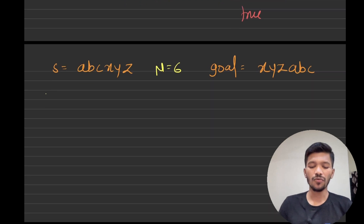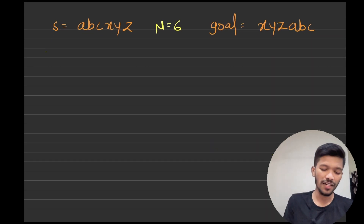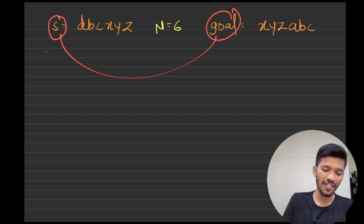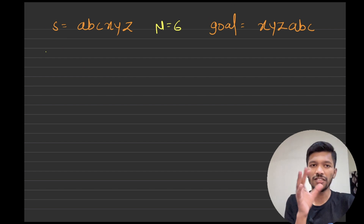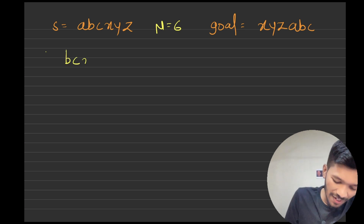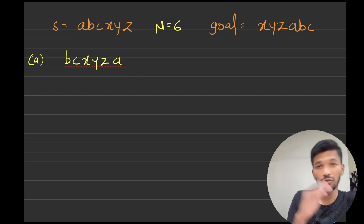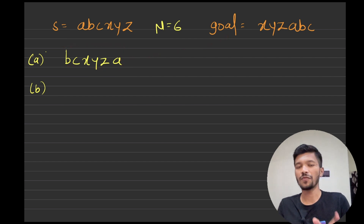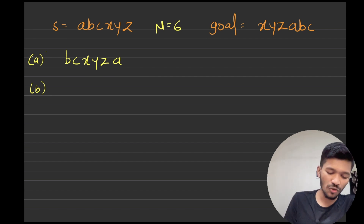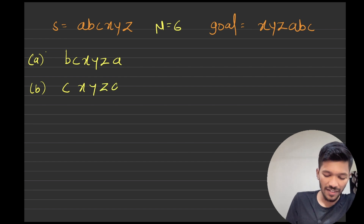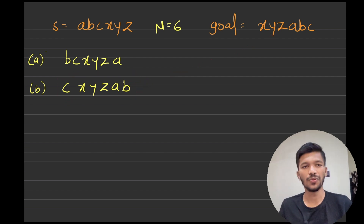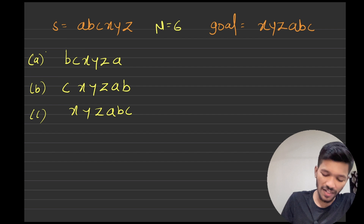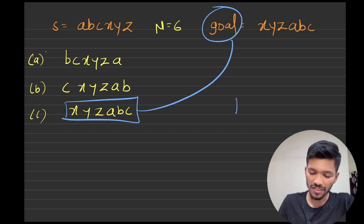Let's take a few examples for clarity. We have two strings s and goal, both of length six. I will shift 'a' to the right side, so the string looks like b c x y z a. It's not equal to goal yet, so I move 'b' to the right: c x y z a b. Still not equal, so I move 'c' to the right: x y z a b c. Now this string is equal to my string goal, so I return true.